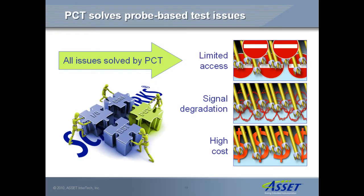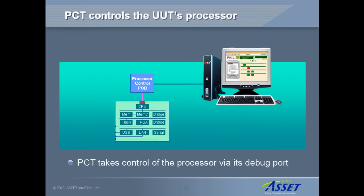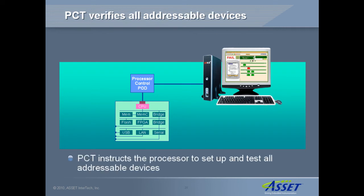PCT's non-intrusive architecture overcomes the limited access, signal degradation and high-cost issues of probe-based board test. The PCT test hardware is connected to the unit under test either via a JTAG port or the processor's debug port. A processor control pod converts signal levels and protocols to match those required by the board's processor. When running tests, PCT takes control of the processor and then instructs it sequentially to initialize and test all CPU addressable devices on the board.